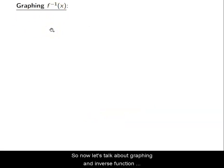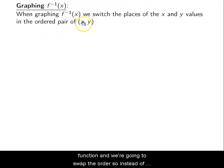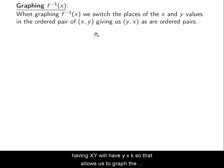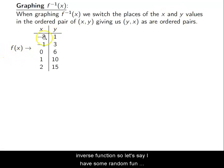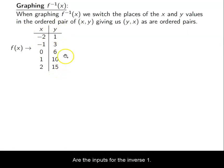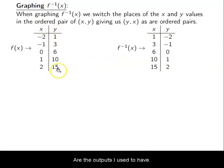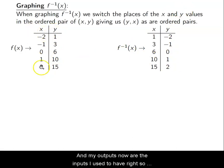Now let's talk about graphing an inverse function. When we graph an inverse function, we take the (x, y) values of our original function and swap the order — instead of (x, y) we have (y, x). So for a table of values, to graph the inverse I just swap the columns. If I had an input of negative 2 with an output of 1, for the inverse function the input becomes 1 and the output becomes negative 2.